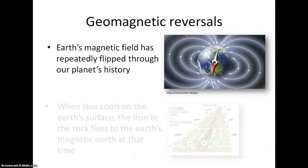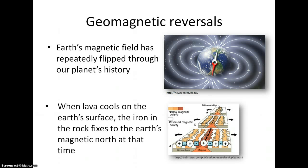When lava is extruded at spreading centers in the ocean floor, the iron in the rocks fixes to the current polarity of the Earth's magnetic field. So in this way, we have a record of magnetic reversals captured in the ocean floor. Also, we use this pattern of alternating polarity to calculate seafloor age. Pretty cool, huh?